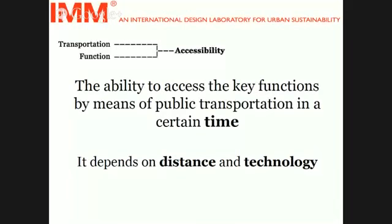The distance is clear, but why technology? Because technology influences accessibility. The distance between Rome and Milan was always the same since the beginning of time, but now, thanks to new technology — faster trains and airplanes — it's more accessible than, let's say, 100 years ago. So different modes and technologies of transportation influence accessibility.